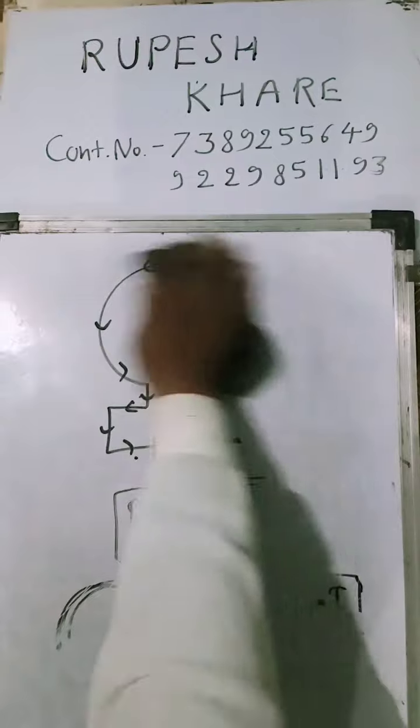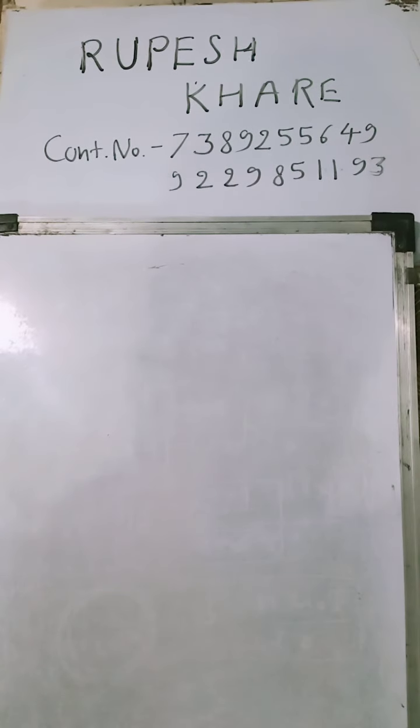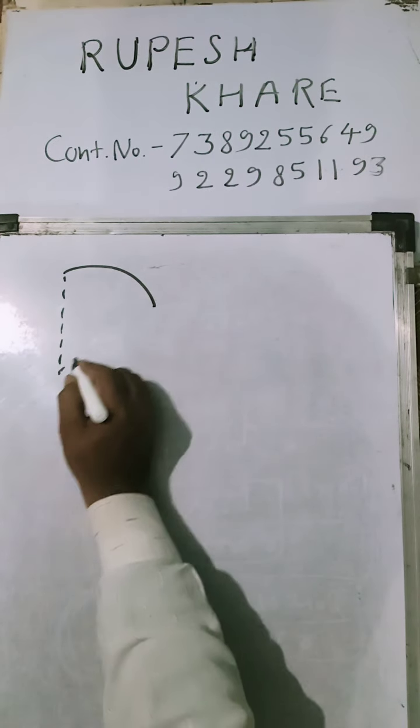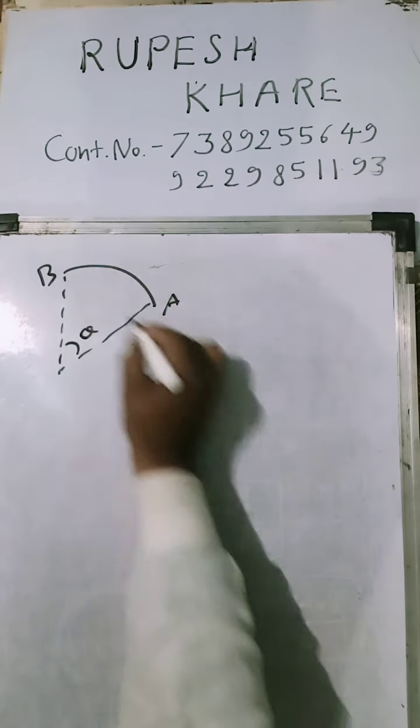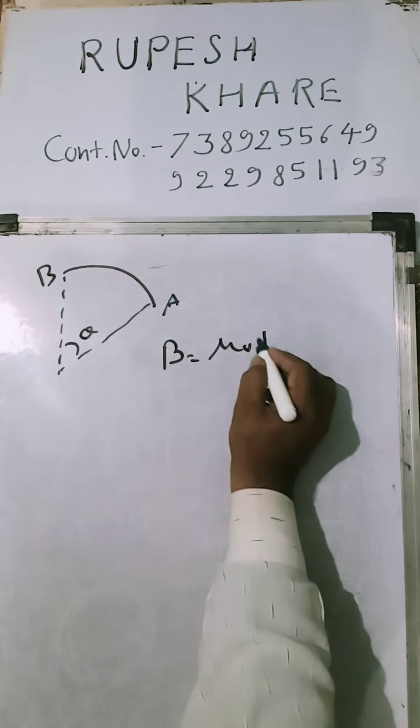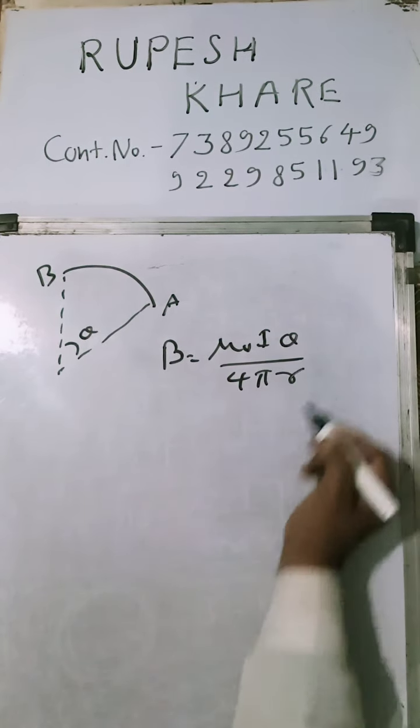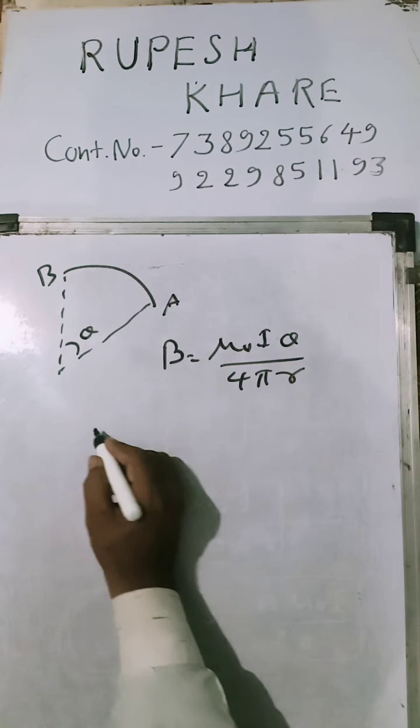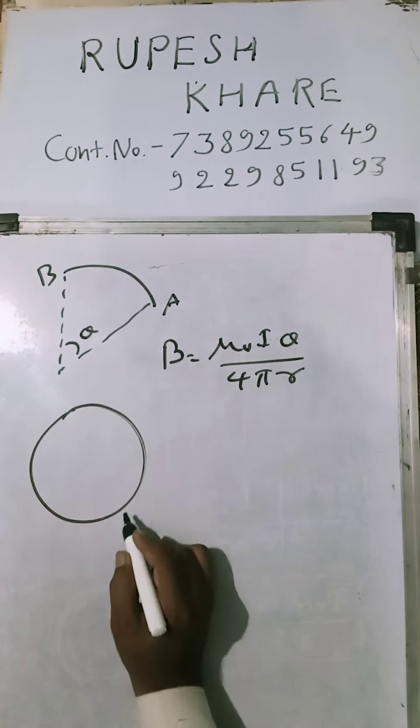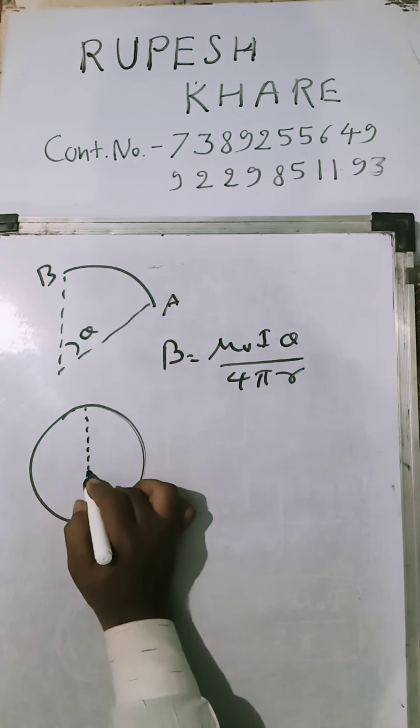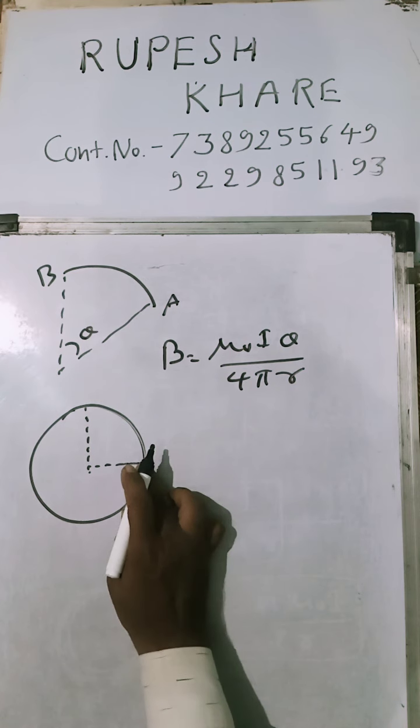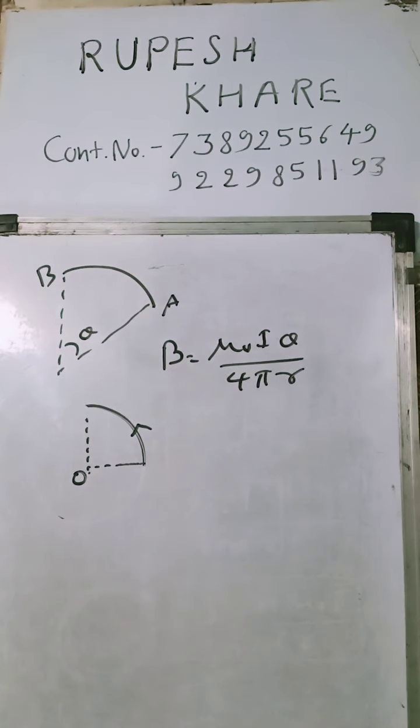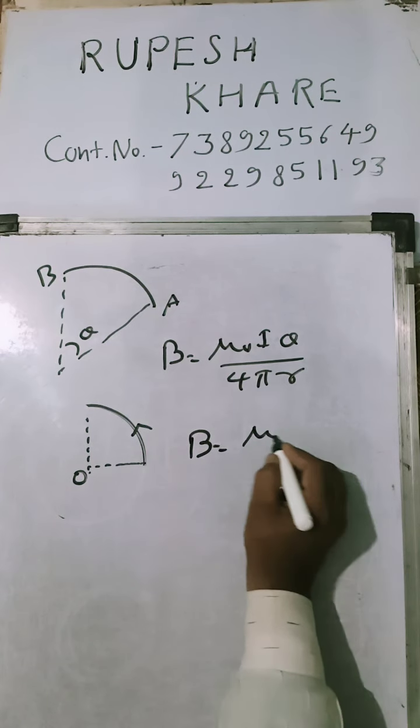Another equation: if theta is different, the value of b is n mu_0 i upon 4 pi R. If there is a circular wire with a one-fourth section, the current-carrying wire will be at the center.